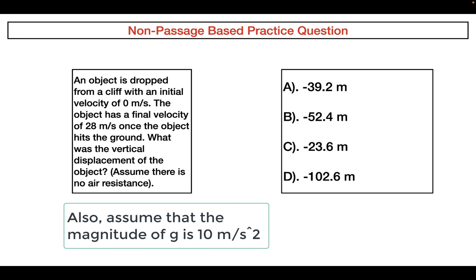Now that we know what freefall is, let's do some non-passage-based practice questions. An object is dropped from a cliff with an initial velocity of 0 meters per second. The object has a final velocity of 28 meters per second when it hits the ground. What was the vertical displacement of the object? Take a moment, pause the video, and see if you can answer it yourself. Hopefully you paused the video — the answer is choice A. Let's see why.